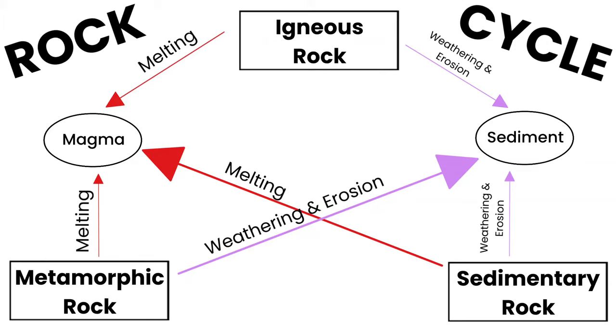Sedimentary rock, remember, forms from sediments through compaction and cementation. Next, igneous rocks form from the magma cooling. This is looking good, but we still need to form metamorphic rock.